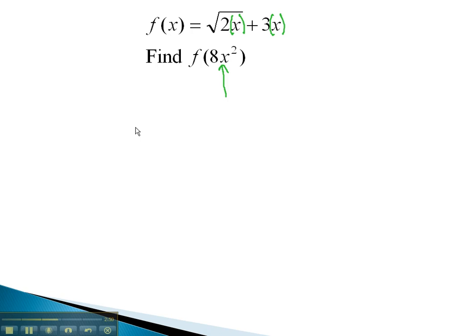This means we will replace both of the x's with 8x squared. When we do, we get the square root of 2x, which now gets replaced in parentheses with 8x squared, plus 3x, which now gets replaced with 8x squared.